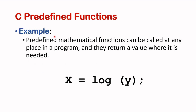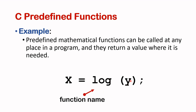Beside the main function, C also provides predefined functions. One example of predefined functions are mathematical functions. An example is shown here which can be called at any place in the program and it returns a value where it is needed. In this case, the mathematical C function log of y returns the result of log of y to the variable x. So log is the function name and y is known as the argument.